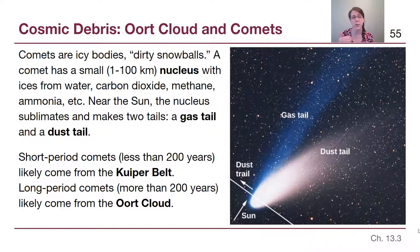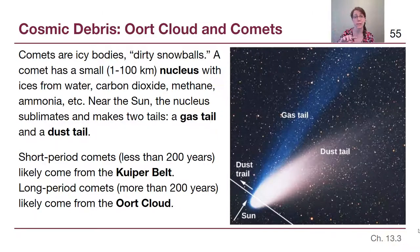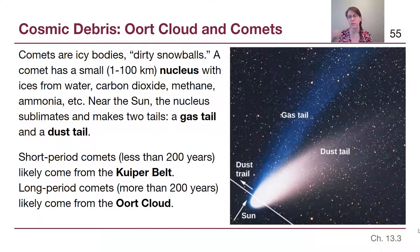When comets get near the Sun, the nucleus sublimates. Sublimation is the fancy way of saying it goes from a solid directly to a gas. The word 'melt' means going from solid to liquid — an ice cube can melt — but in space, because we can't have liquid water, it goes straight from solid to gas.